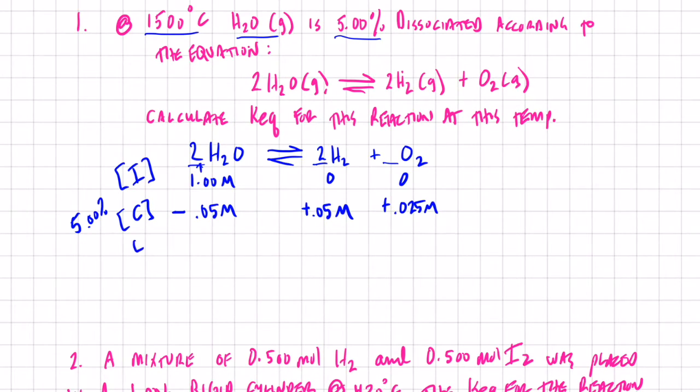So at equilibrium, we will have 0.95 molar water vapor remaining. Remember, it only dissociated 5%, so most of it is still intact as water vapor molecules. We will have 0.05 moles per liter of hydrogen gas and 0.025 moles per liter of oxygen gas.